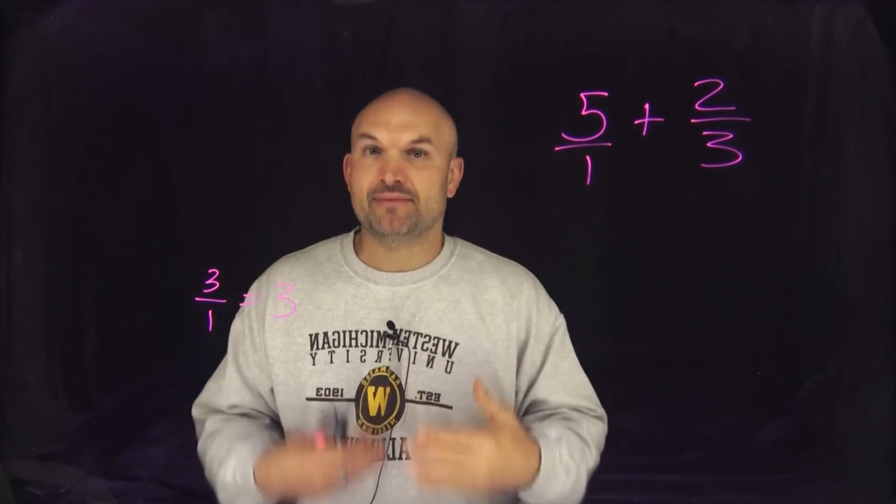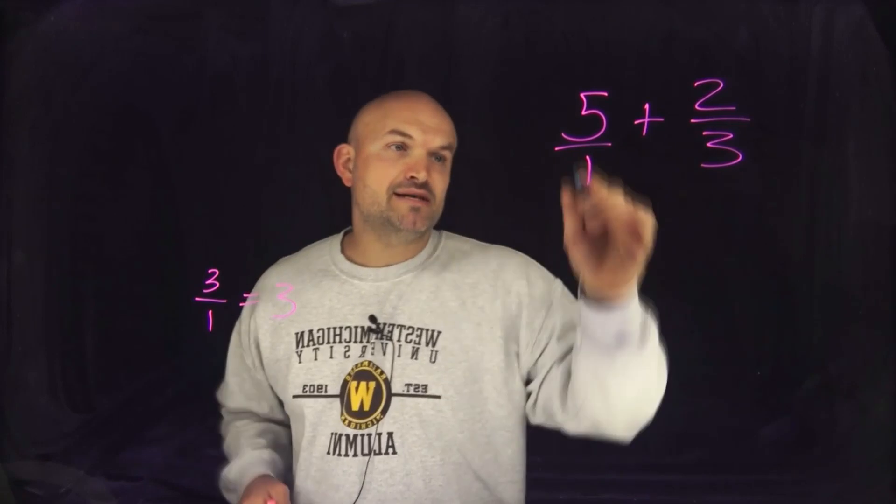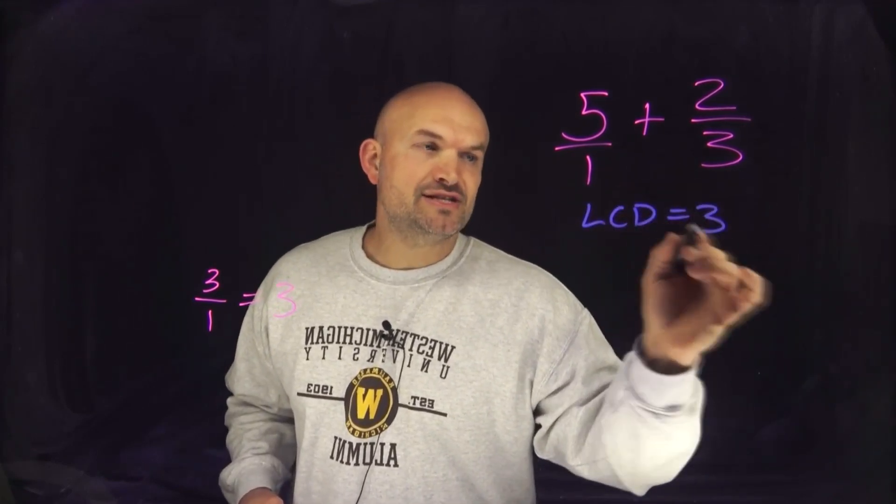So they both divide into the number 3, and that is going to be the smallest number that they both divide into. So in this case my least common denominator, my LCD, is just going to equal 3.